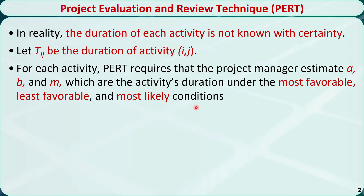PERT requires that the project manager estimates each activity's duration under three different conditions. A is the estimate of the activity's duration under the most favorable conditions. For the house building project we talked about in previous videos, the conditions can be: the weather is always sunny, it's not too hot or too cold, and construction materials can be delivered to the site quickly, and so on.